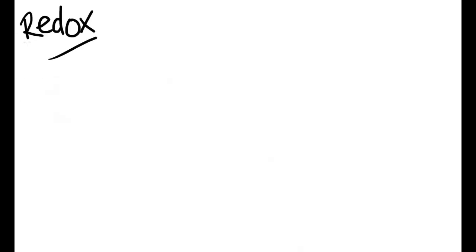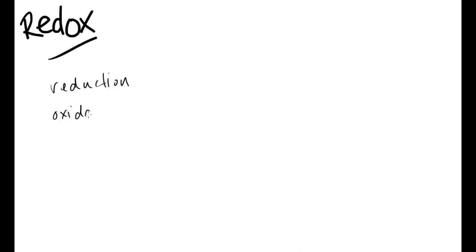This next lesson is about the term redox, which comes from the unit 2 half of the chemistry AS specification. The starting point is the term redox and what it actually means. We can break it down into RED and OX — the RED part stands for reduction and the OX part stands for oxidation. These may be terms you've heard before. Oxidation you should have done with the reactions of fuels, for example.